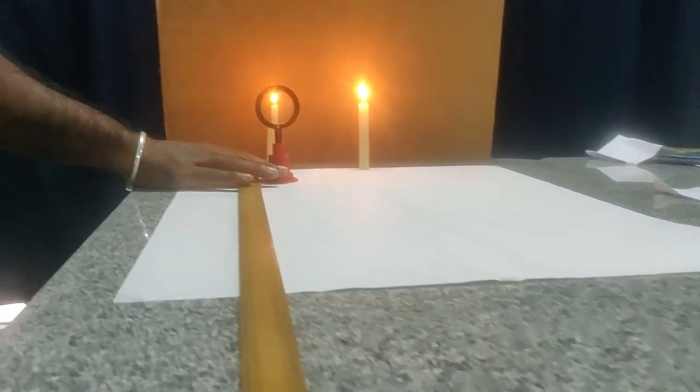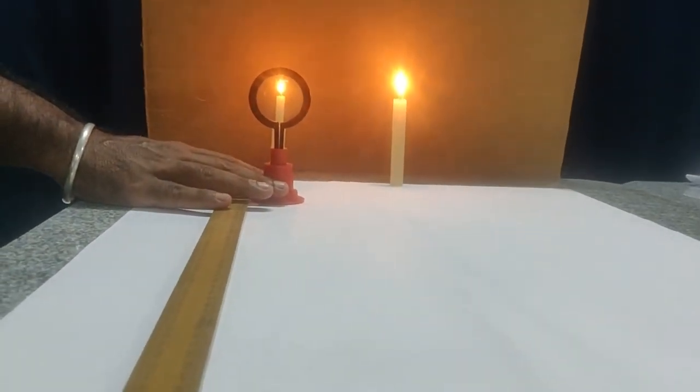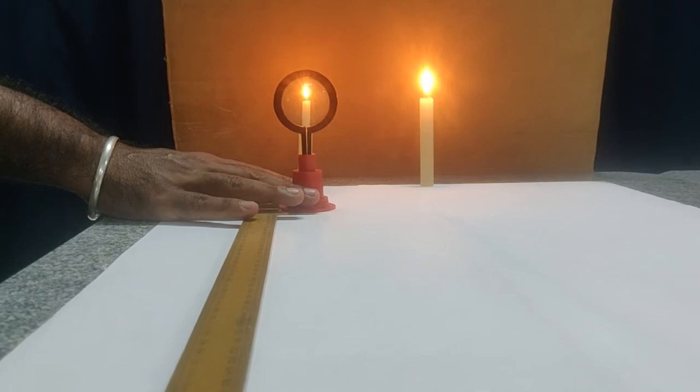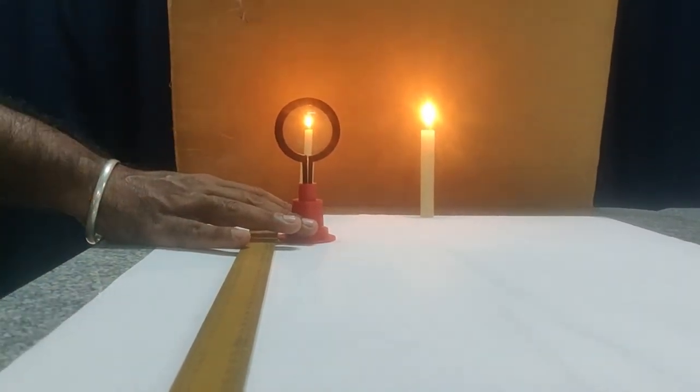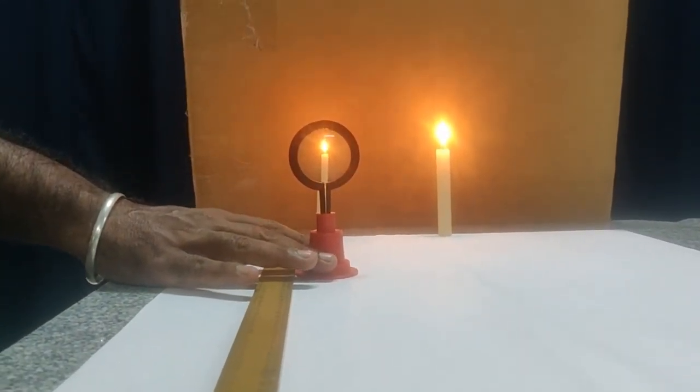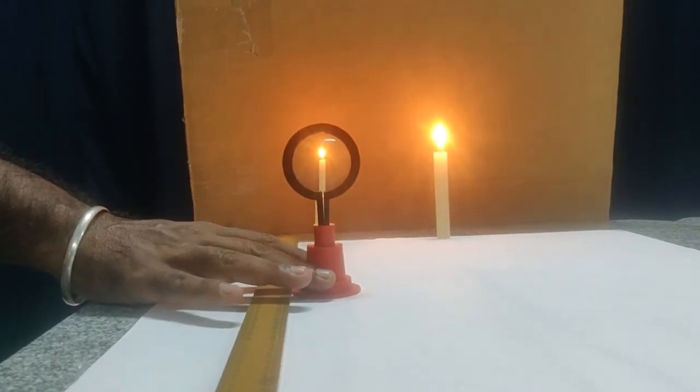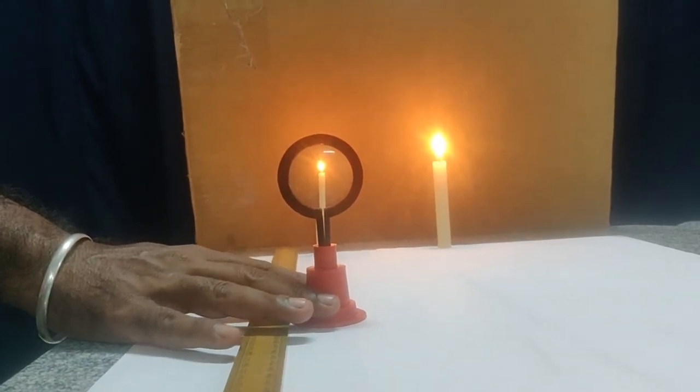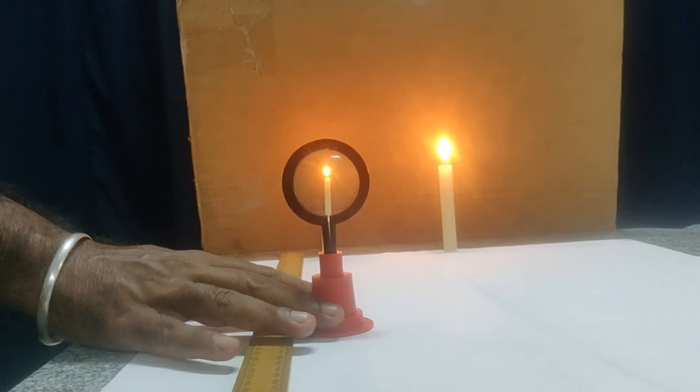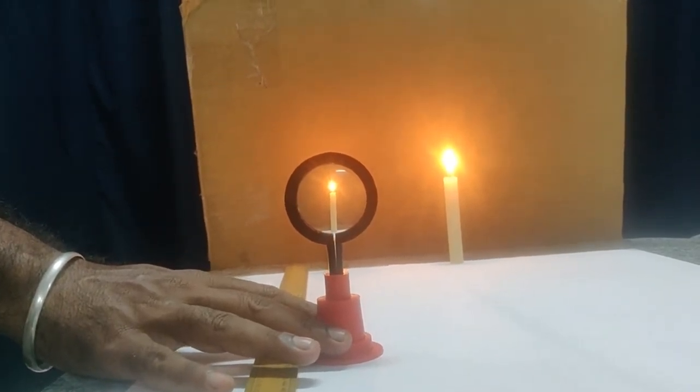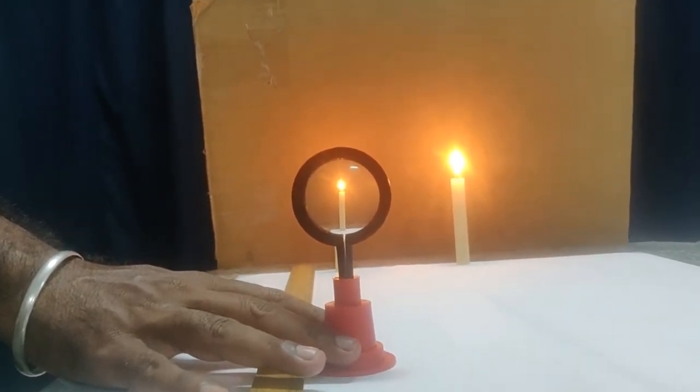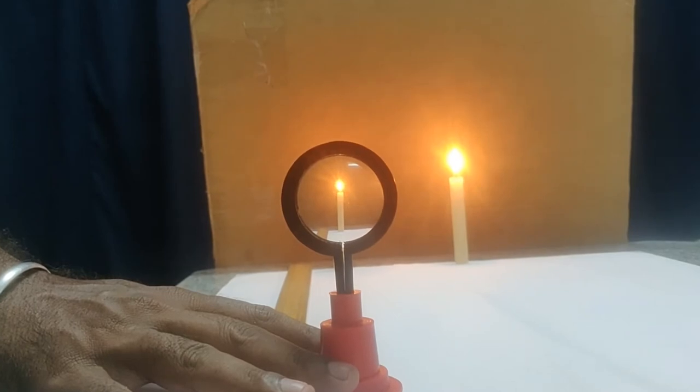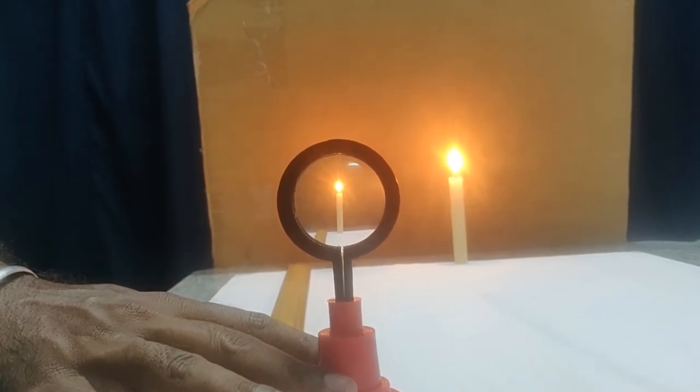So we can see that the size of the image is smaller as we increase the object distance, as we bring it closer and bring it closer. So as we increase the object distance we see that the virtual image formed is smaller and smaller. We can bring even further so you can clearly see that the virtual image is decreasing in size.